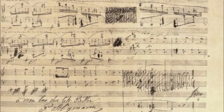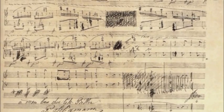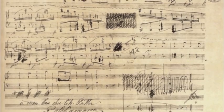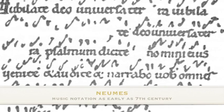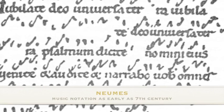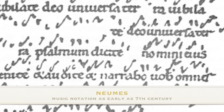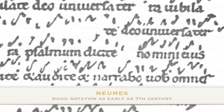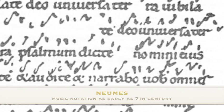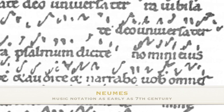As early as two centuries before Christ, we see evidence of music in Greek statuary. For centuries, composers have been putting their music down on paper. The squiggly lines you see in this example are called neumes. The voice went up as the line went up, and the voice went down as the line went down.